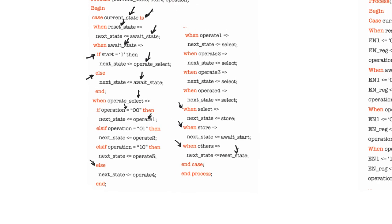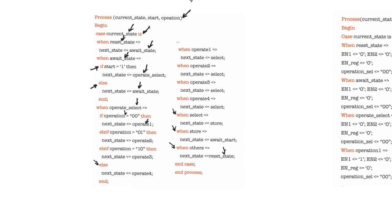This whole next state process synthesizes into a combinational circuit because everything on the right-hand side of an assignment statement is in the sensitivity list, as are all conditions such as 'if start equals one' and the selector of the case statement. The sensitivity list is complete, no implicit latches are created anywhere in this process, and therefore it is purely combinational. It only determines what the next state should be; it does not update the state of the machine.